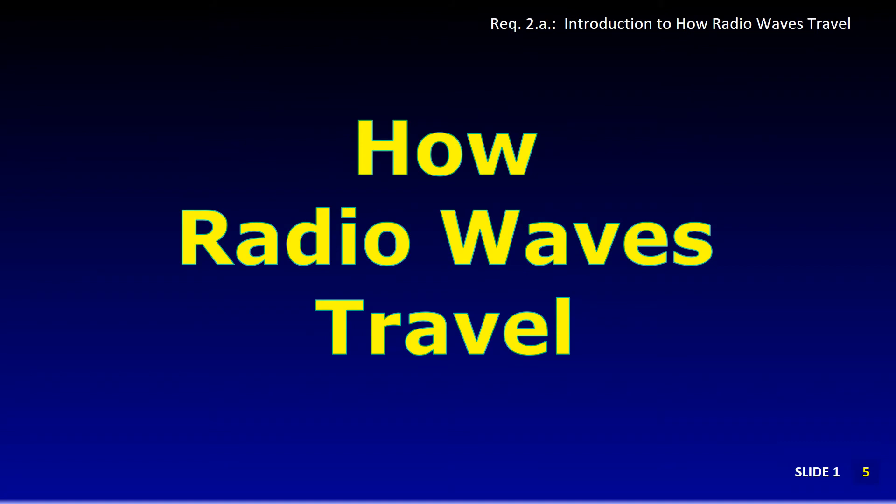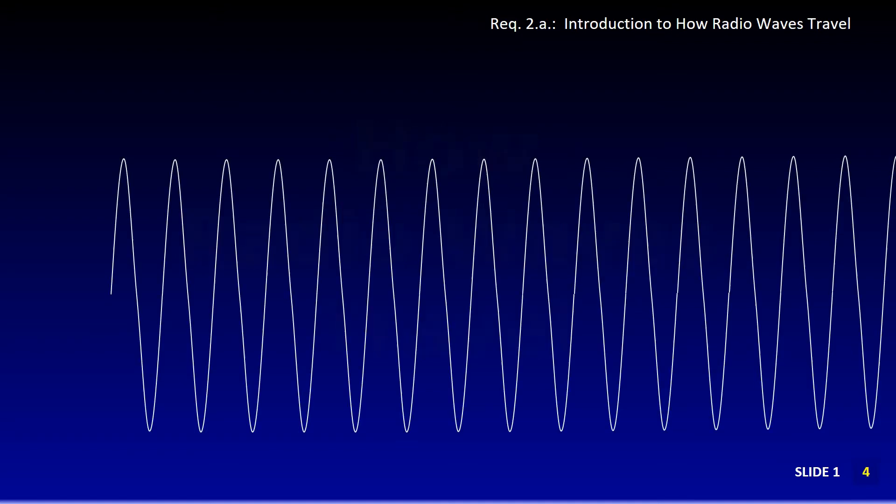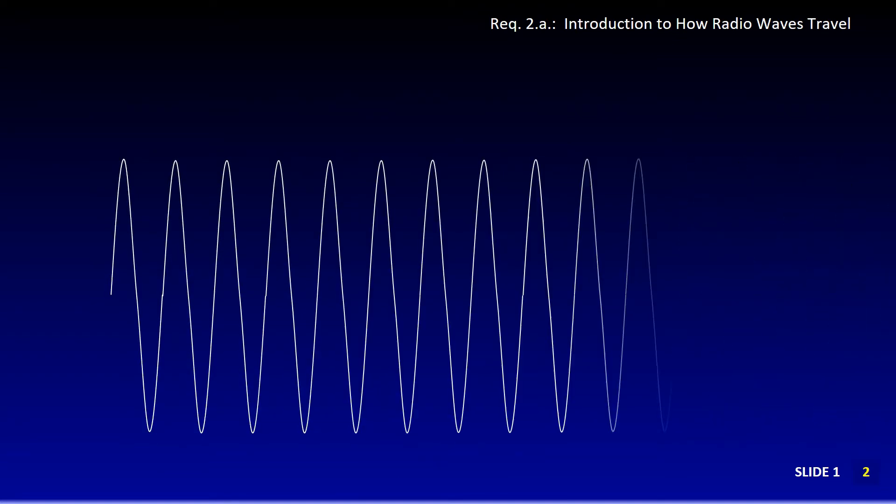Some people think the whole idea of radio waves is magic. Even though we can't really see radio waves, we often show them as a series of rippled lines like this. Radio waves actually move. They move at the speed of light.